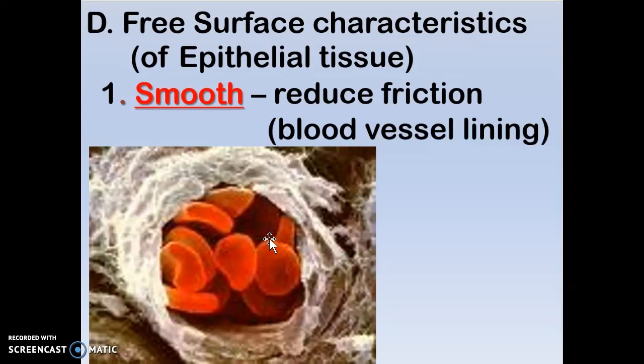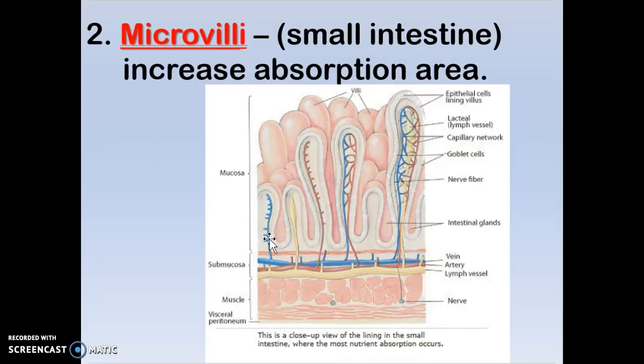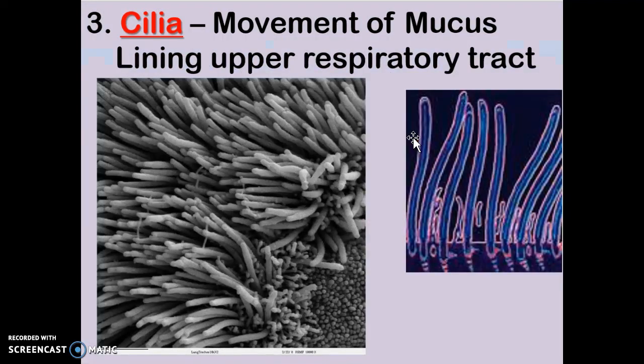The lining of your heart is smooth, so the blood slides right through without getting sticky. Epithelial cells create the microvilli — those columnar cells wrap around to make the microvilli, and within that you've got your little capillaries for absorption into the blood. Cilia are on the surface of the pseudostratified epithelial tissue.